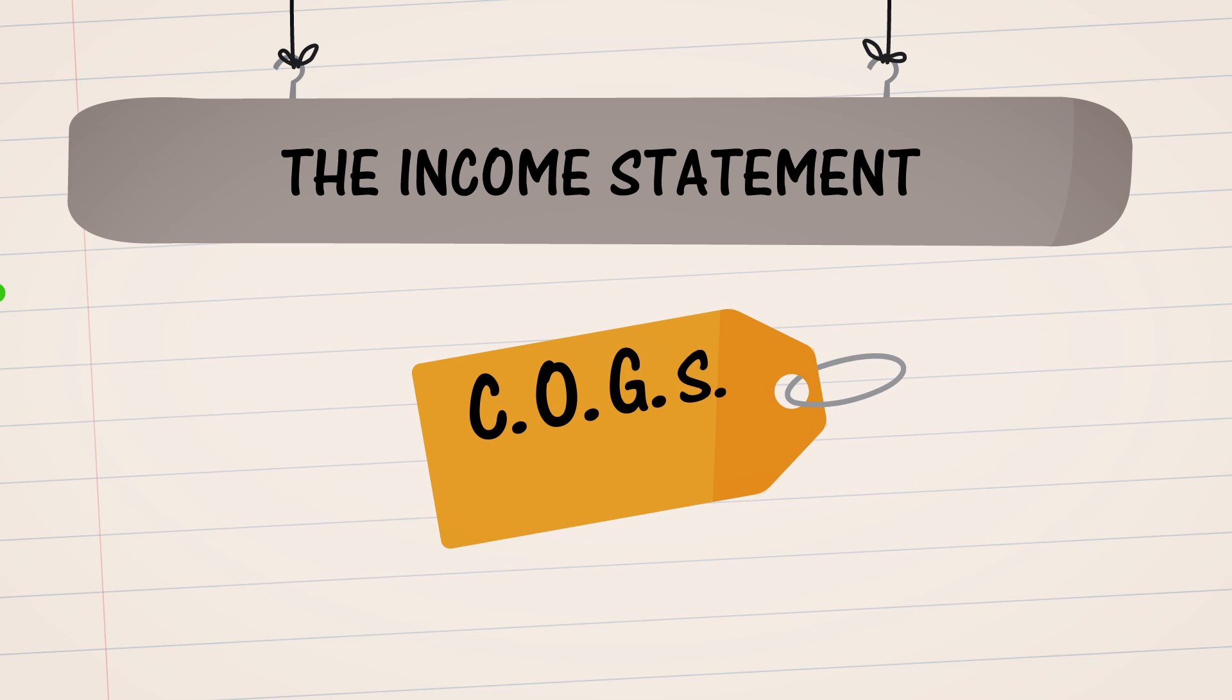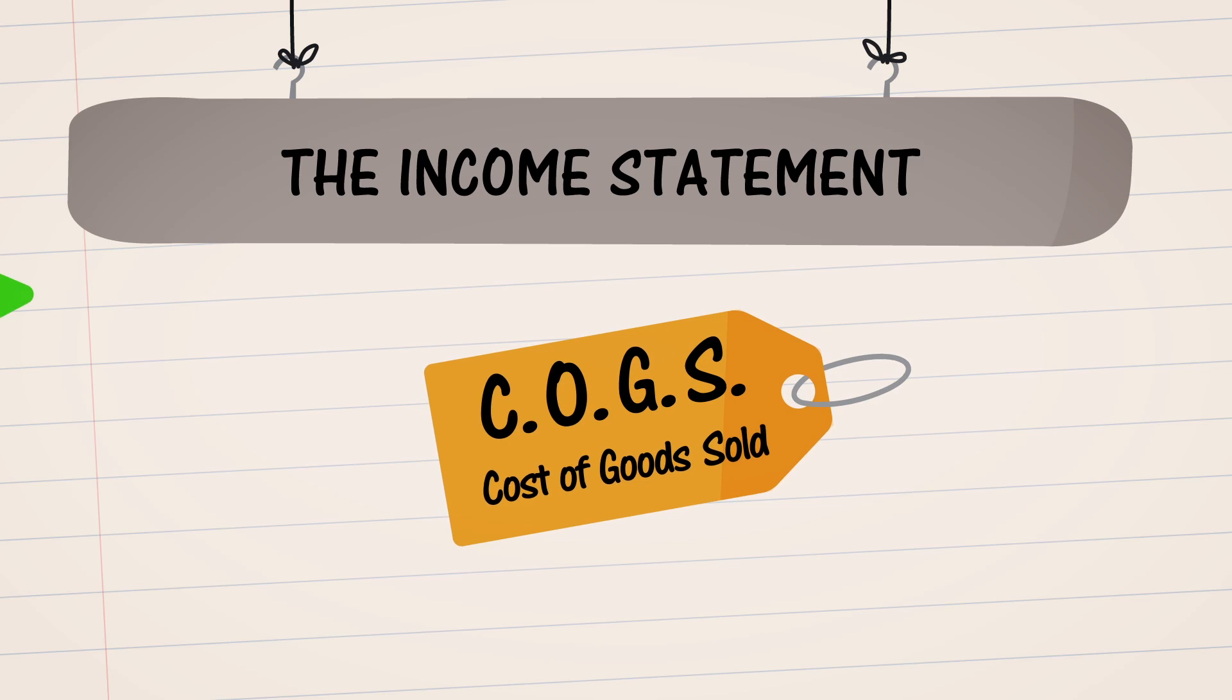Next come COGS, or cost of goods sold, which is the amount spent producing or acquiring the products or services, including material and labor costs.